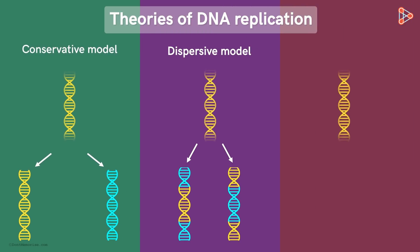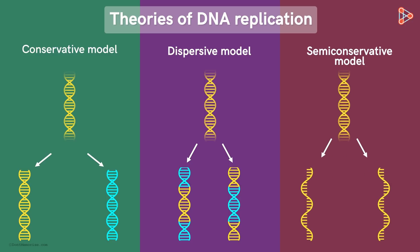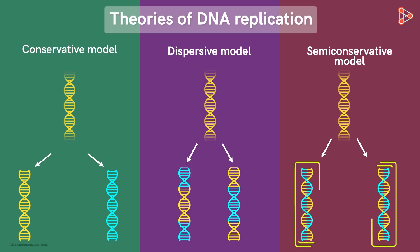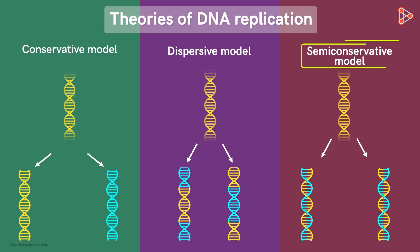The last model is called the semi-conservative model of replication. This model suggested that two strands of DNA unwind and serve as templates for newer strands. As a result, the replicated DNAs contain one old strand and one new strand — hence the name semi-conservative.